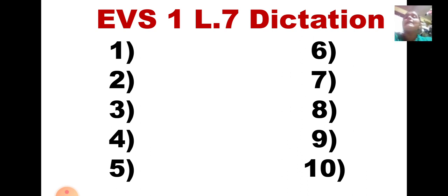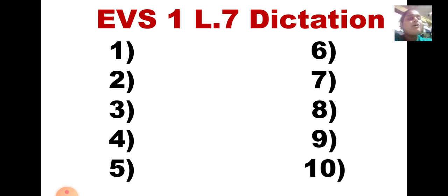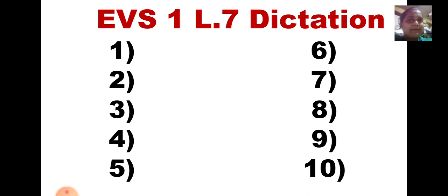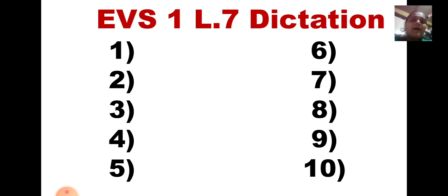Now we are going to check the words. If it is right, give it right. If it is wrong, give it wrong. And do the correction three times. The wrong words correction — how many times you are going to do? Three times. And give marks also. It is out of ten. Each word is of one mark. So how many rights you have got, depend on that you give marks out of ten.